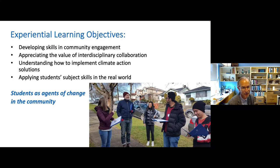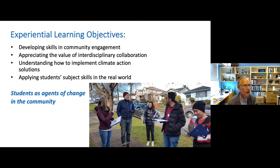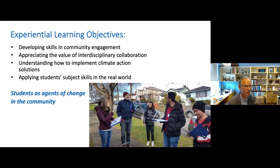The course has four overarching experiential learning objectives. The key one is for students to develop skills in community engagement — a social goal. The other three are around appreciating the value of interdisciplinary collaboration, understanding how to implement climate action solutions at the community level, and applying students' subject skills in the real world. We see this in the end as students as agents of change within communities, doing what they can.